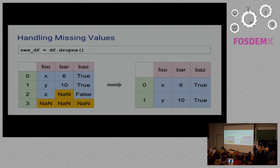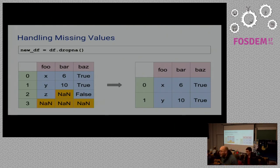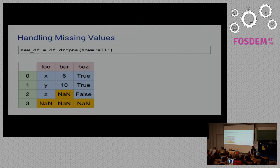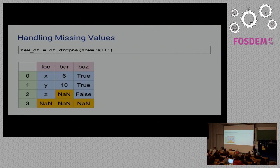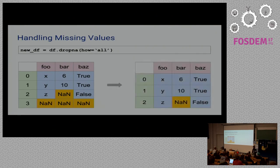There may be a case where a row has some valid data and you don't want to lose it. For that, you can pass a parameter to dropna saying you only want to drop a row if all of its values are undefined. So it will only drop the last row, preserving data you would otherwise lose with the default setting.